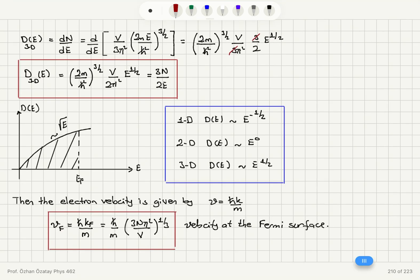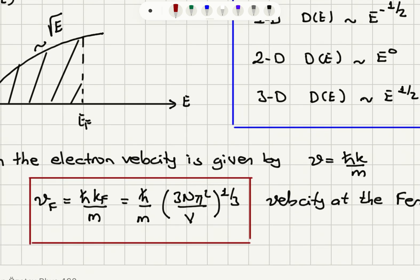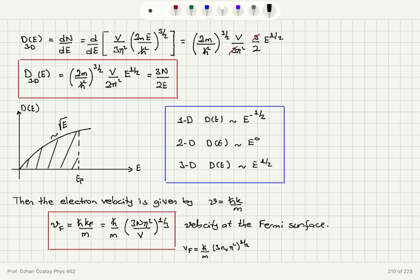Once we know the electron momentum ℏk, dividing by mass m gives the electron velocity. The Fermi velocity is v_F = ℏk_F/m = (ℏ/m)(3nπ²)^(1/3), which is the velocity of electrons at the Fermi surface.